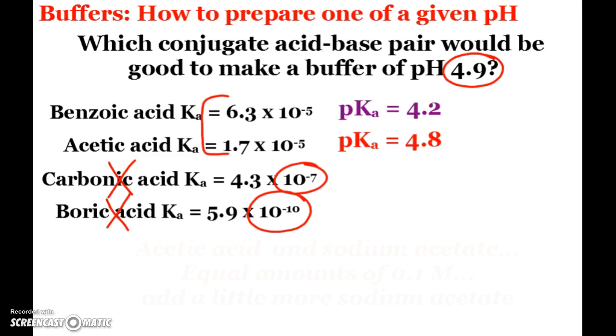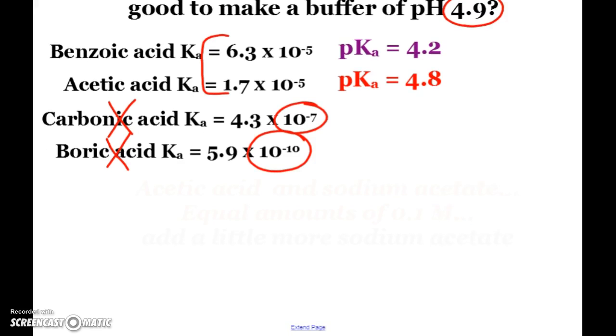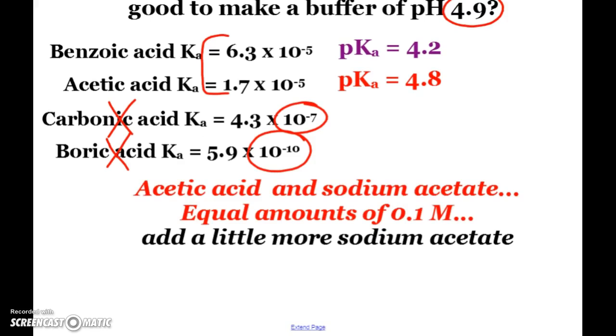What would I partner up with it? I need the acetate ion. Preferably partnered up with one of my strongs, lithium, sodium, potassium, calcium, strontium, barium. So for example, I could choose to use acetic acid and sodium acetate equal in the equimolar situation. And when I do that, I would end up with a buffer solution with a pH around 4.8. So then I would just simply add a little more sodium acetate to get that pH to bump up close to 4.9.